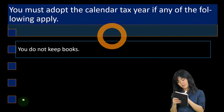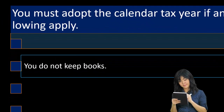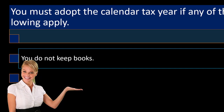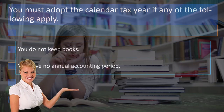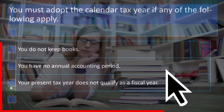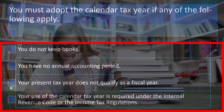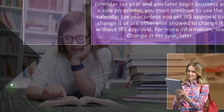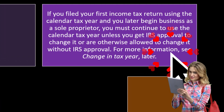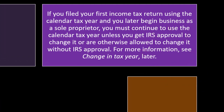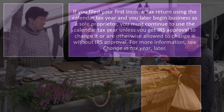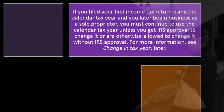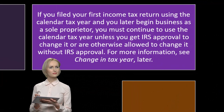You must adopt the calendar tax year if any of the following apply: you do not keep books, so you have no annual accounting period; your present tax year does not qualify as a fiscal year; or your use of the calendar tax year is required under the Internal Revenue Code or the Income Tax Regulations. If you filed your first income tax return using the calendar tax year and you later begin business as a sole proprietor, you must continue to use the calendar tax year unless you get IRS approval to change it.